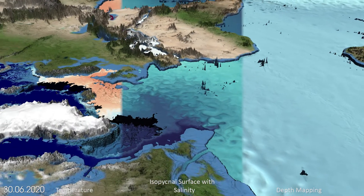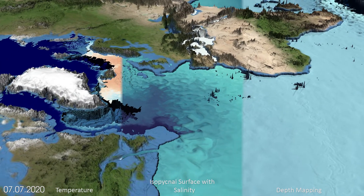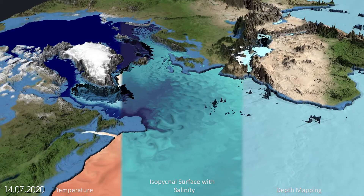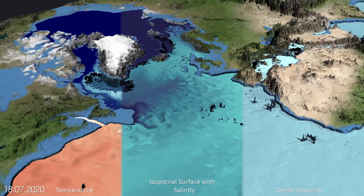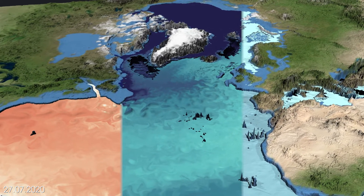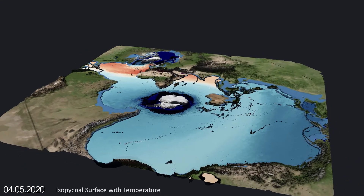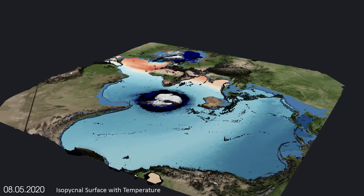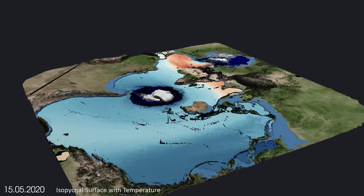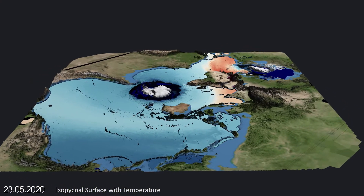The isopycnal surfaces can crop out at the ocean surface, as can be seen in the Labrador Sea. Here, the ocean interior is directly in contact with the overlying atmosphere and water masses, such as the Labrador Sea water, are formed. We see re-stratification of the Labrador Sea following the strong and deep vertical mixing and homogenization in the boreal winter. Similarly, we also observe an outcropping of the isopycnals around Antarctica, where the Antarctic Intermediate Water is formed.